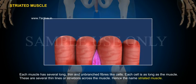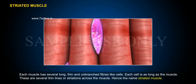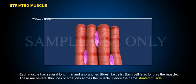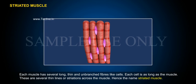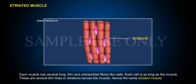Each muscle has several long, thin and unbranched fiber-like cells. Each cell is as long as the muscle. There are several thin lines or striations across the muscle. Hence, the name striated muscle.